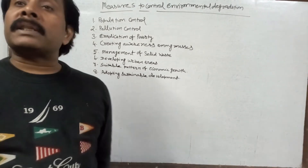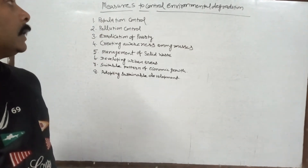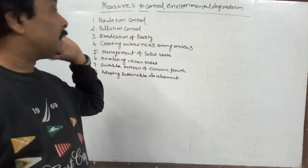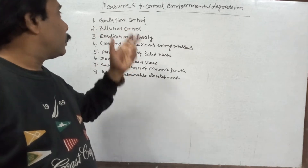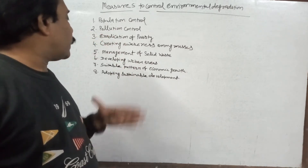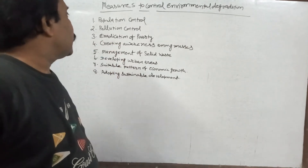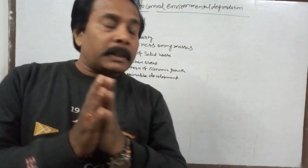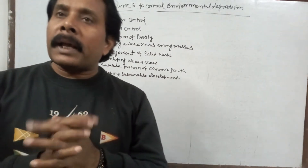When I was discussing the main causes of environmental degradation, I told that you must do the opposite of that. The first point was increase in population, so here I have written population control. Continuously increasing pollution, so here I have written pollution control. Poverty was a major factor, and here I have written eradication or removal of poverty. Whatever factors you have already studied, when we just make them opposite, you will get the measures to control environmental degradation.